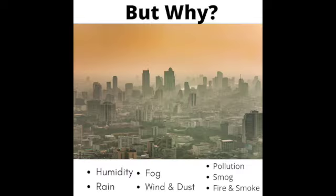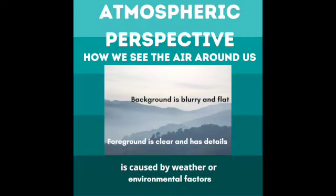But why does this happen? Things like the weather, humidity, rain, fog, wind, and dust, and things like pollution, smog, fire, and smoke also make atmospheric perspective. So let's review: atmospheric perspective is how we see the air around us. The background is blurry and flat, the foreground is clear and has details, and it is caused by weather or other environmental factors.